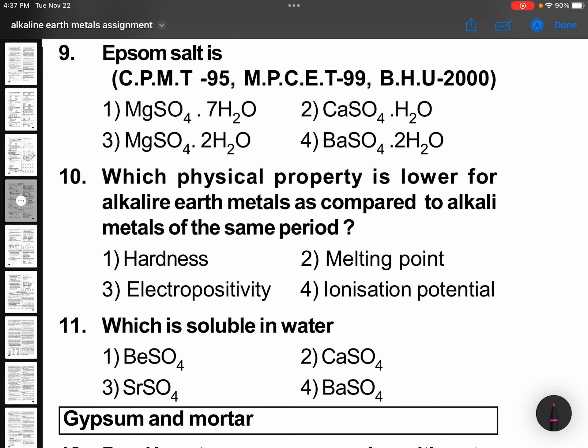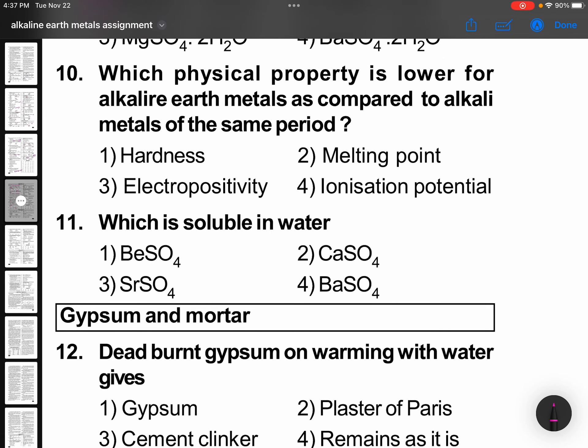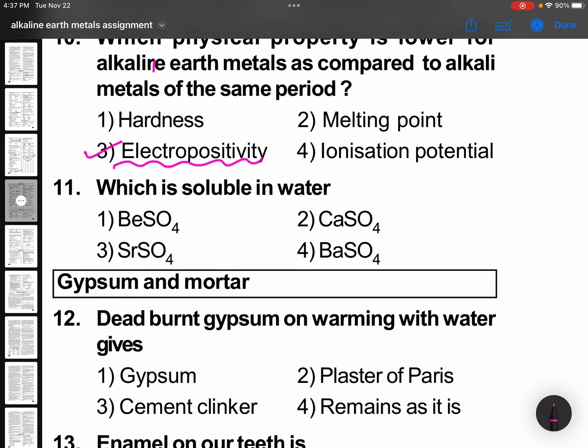Epsom salt is MgSO4·7H2O. Which physical property is lower for alkaline earth metals compared to alkali metals of the same period? This is something interesting. Electropositivity. Because alkali metals are more electropositive than alkaline earth metals because they can lose electron easily.